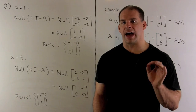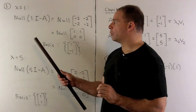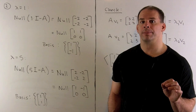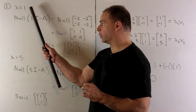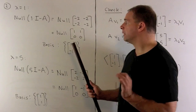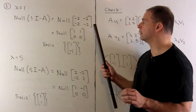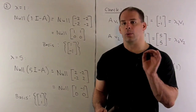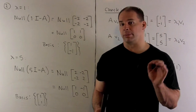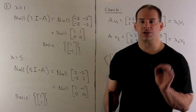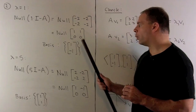Now we want to find a basis of eigenvectors for matrix A. For each eigenvalue, we find the null space of lambda I minus A — that gives us our space of eigenvectors. For lambda equal to one, we have the null space of one times I minus A, which is the null space of the matrix with entries minus two, minus two, minus two, minus two. Row reducing gives us one, one, zero, zero. A basis for the null space is the vector [1, -1]. So the eigenspace for eigenvalue one is the span of [1, -1].